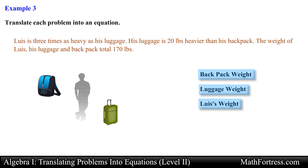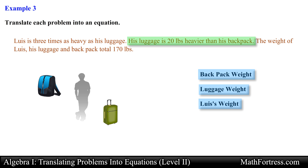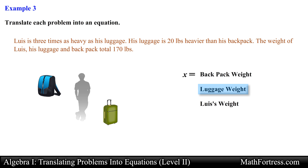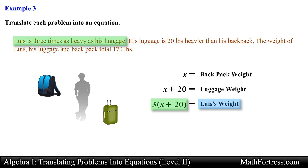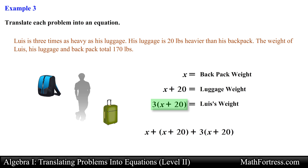Let's figure out which unknown we have absolutely no information about. We know Louis's weight is three times the weight of his luggage, and his luggage is 20 pounds heavier than his backpack. But we have no idea how the backpack relates to the other unknowns. So let's represent the weight of the backpack with the variable x. The weight of the luggage can then be expressed as x plus 20, and Louis's weight as 3 times the quantity x plus 20. The last sentence tells us the combined weight equals 170 pounds, giving us the equation: x plus (x plus 20) plus 3 times (x plus 20) equals 170.